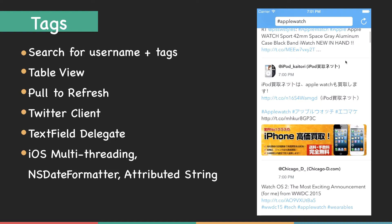Pull to refresh is a feature that most iOS apps are using right now with the table view. It is a very intuitive way to just pull the table view down and refresh the data — the best and most intuitive way to refresh data in a table view. We will learn about text field delegates, iOS multi-threading to download images from a URL, formatting dates using NSDate formatter, and formatting attributed strings.